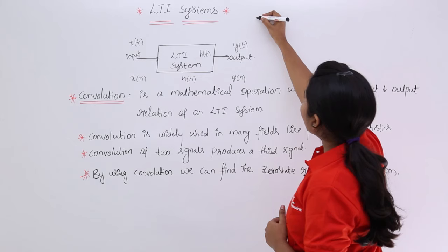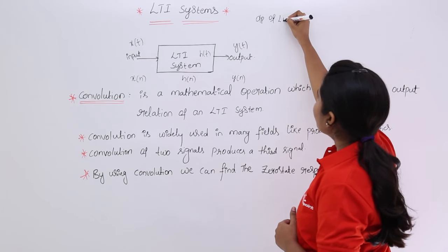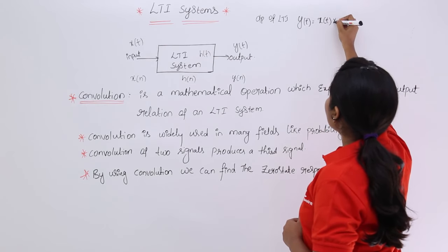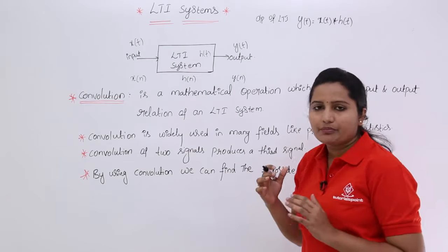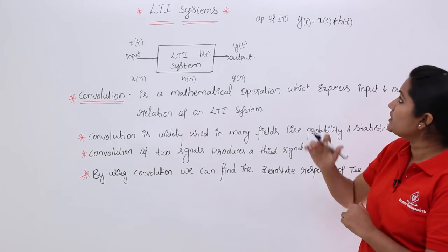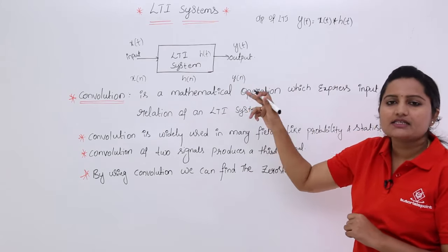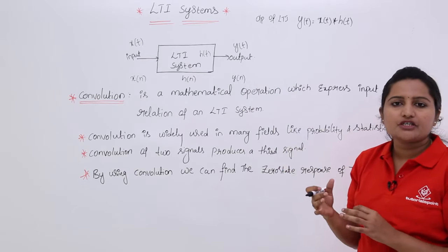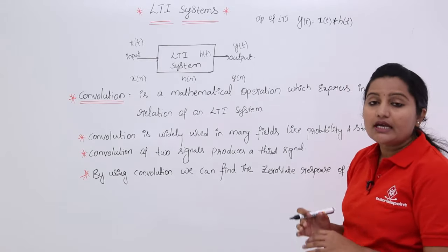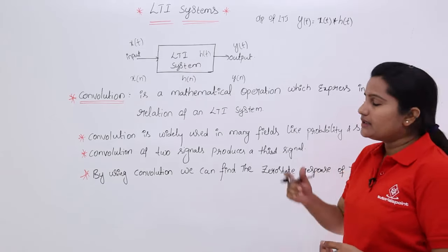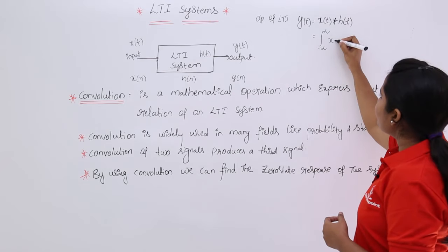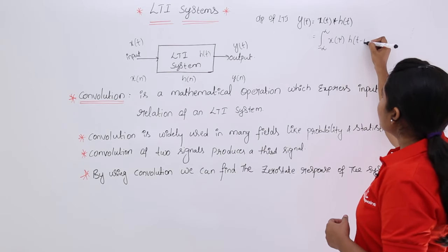The output of an LTI system can be written as y(t) = x(t) * h(t), where the star symbol represents convolution. This means the LTI output is always equal to the input convolved with the impulse response. Mathematically, x(t) * h(t) is equivalent to the integral from minus infinity to infinity of x(τ) · h(t − τ) dτ.